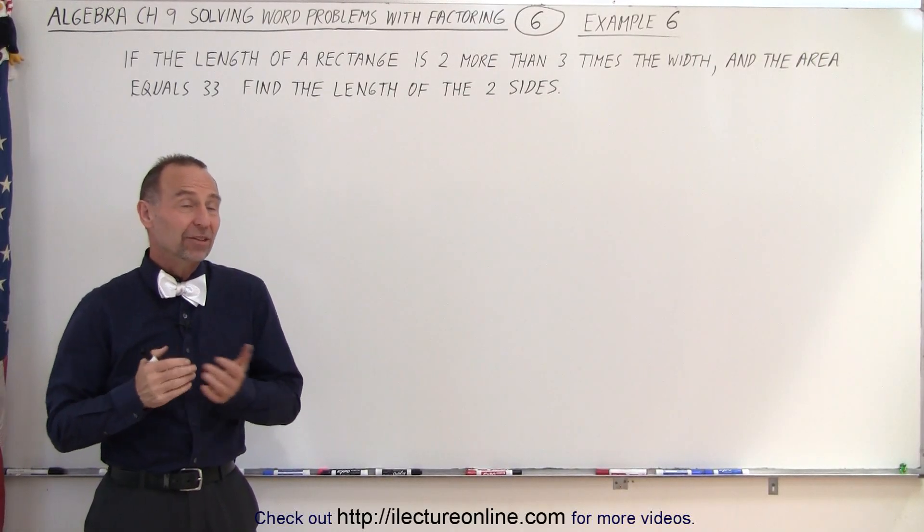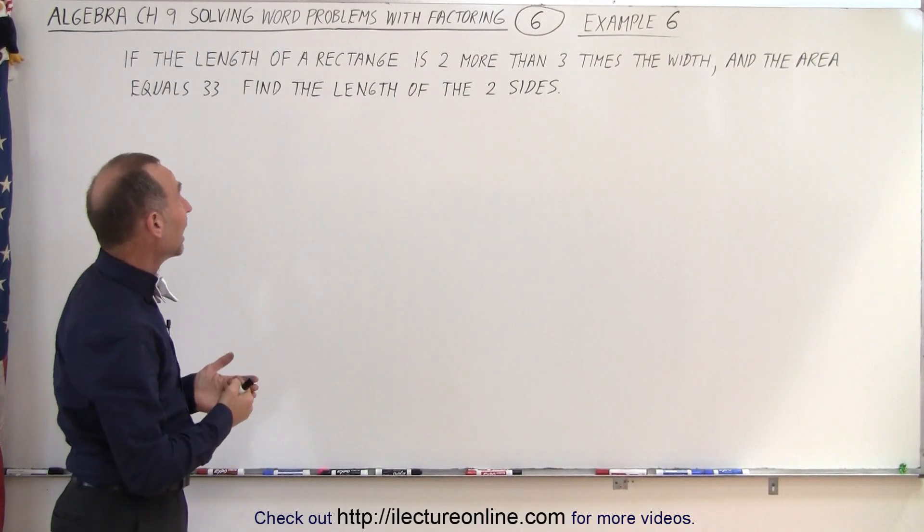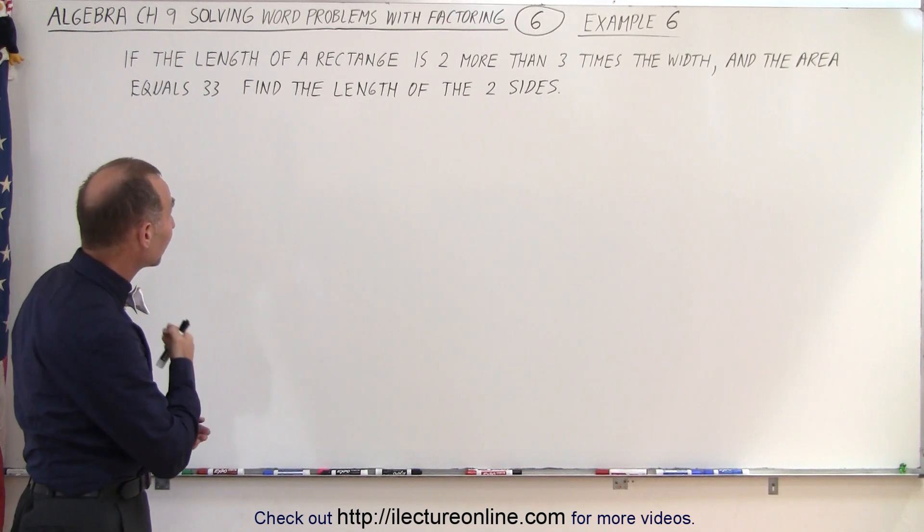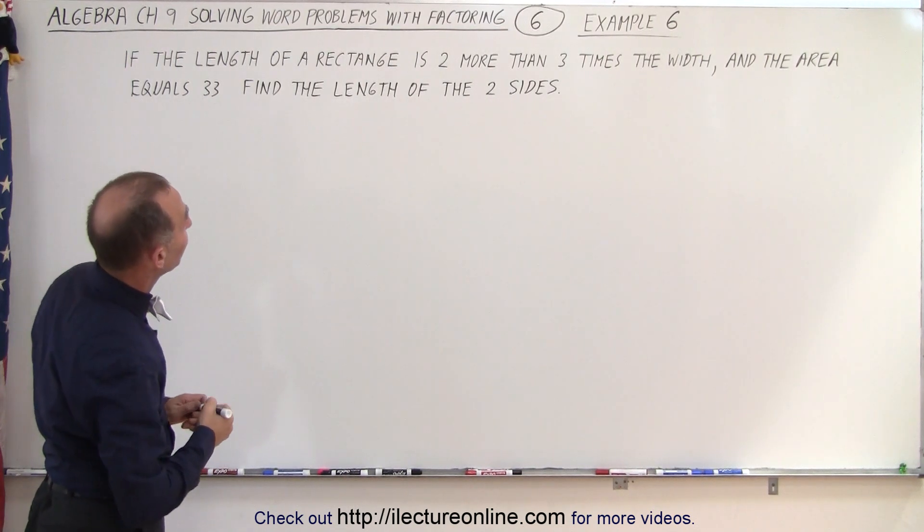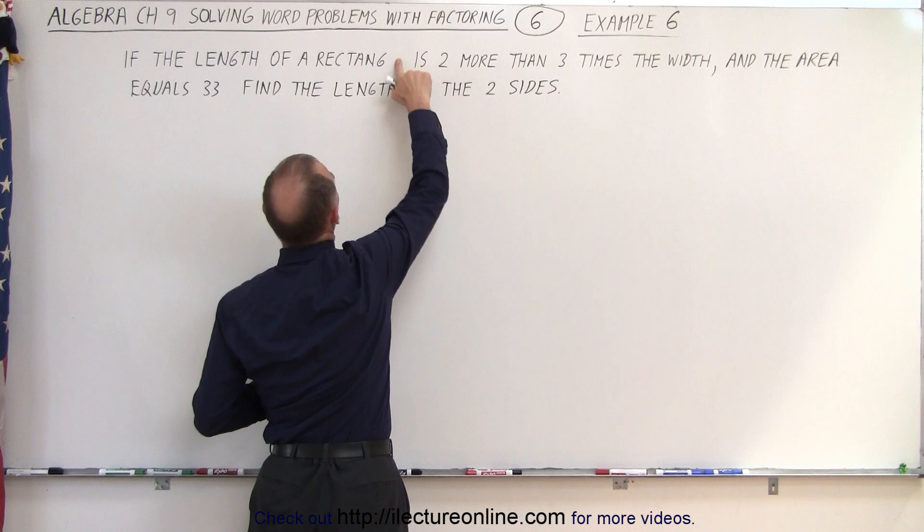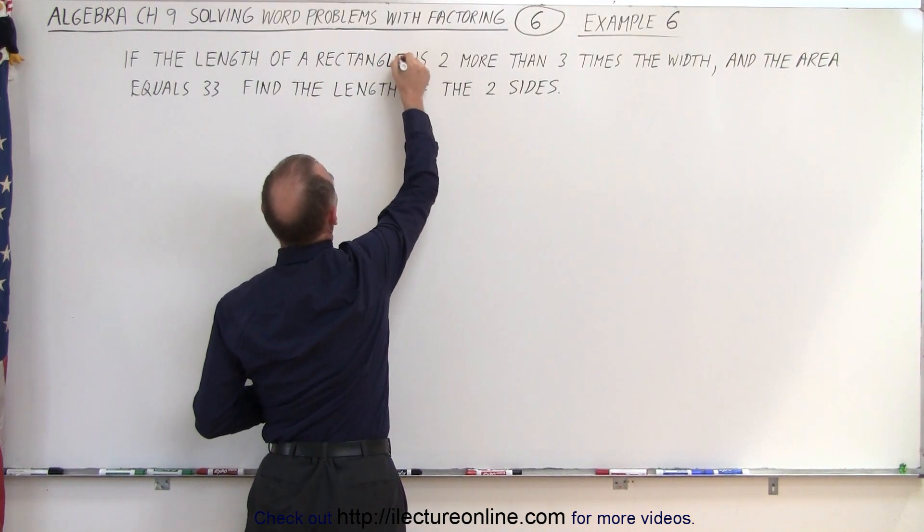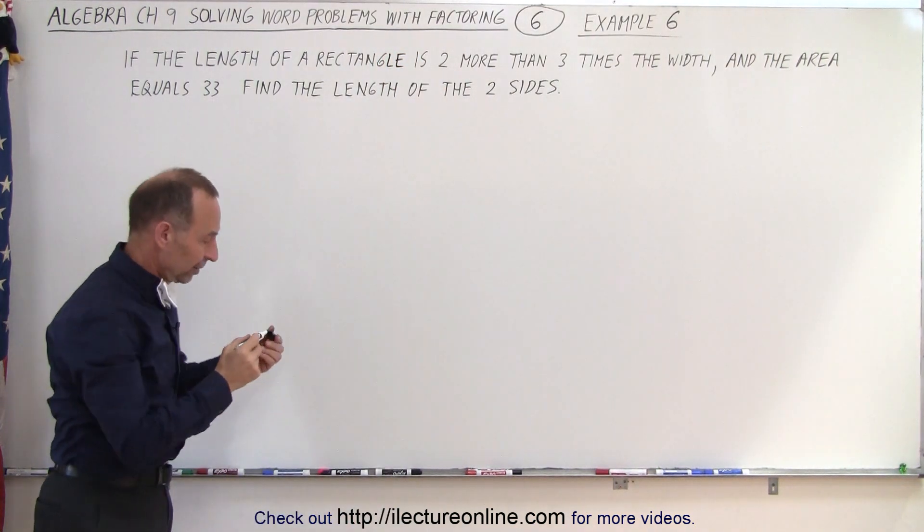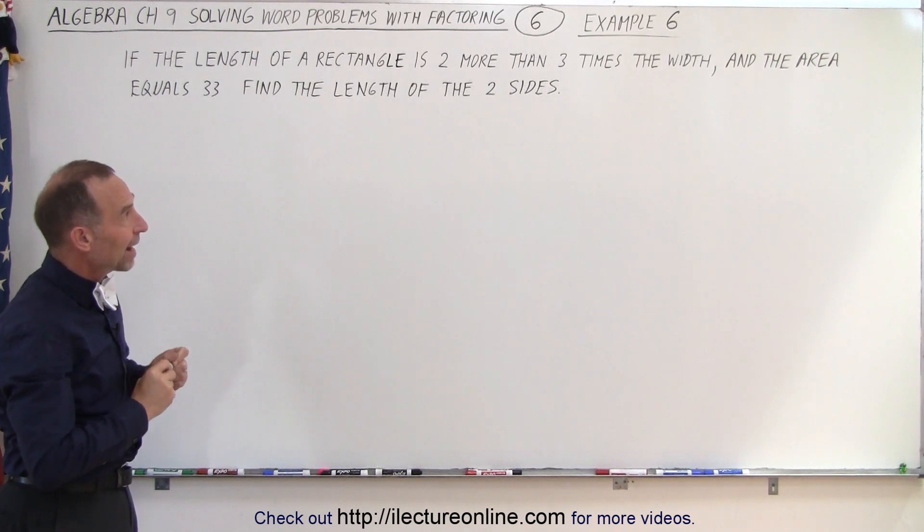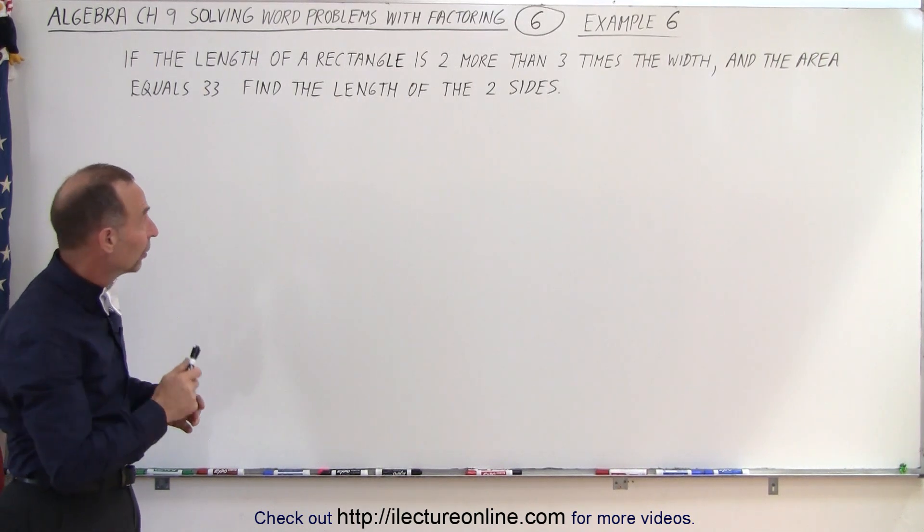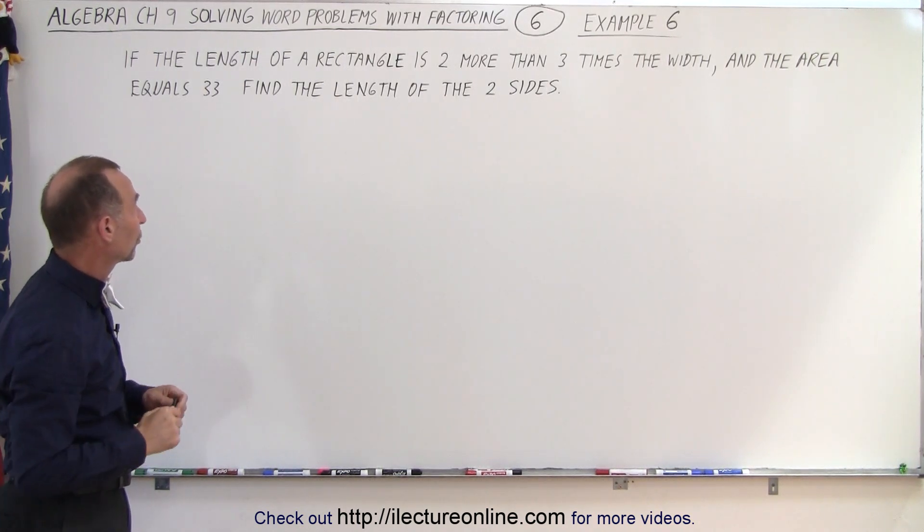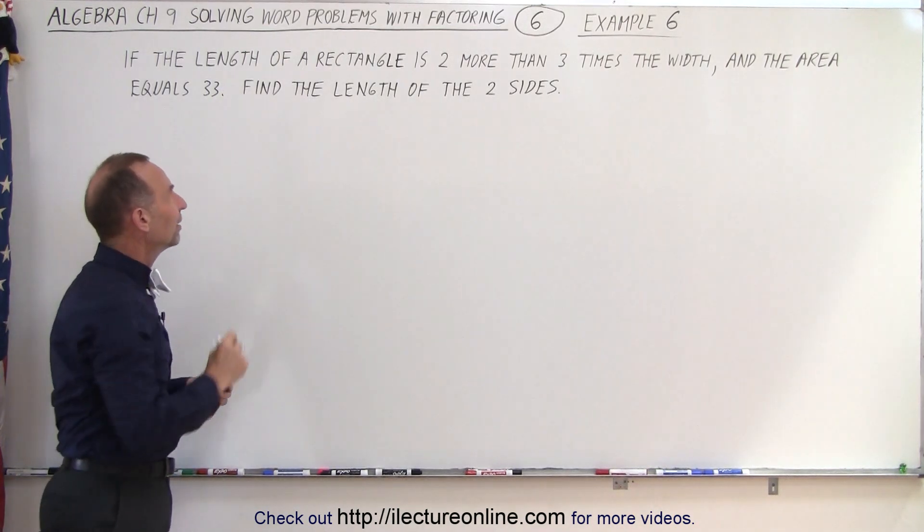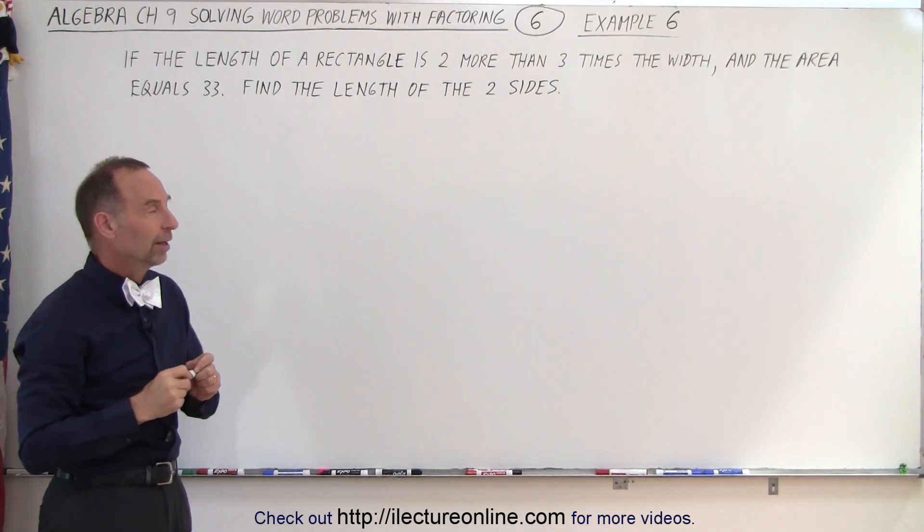Welcome to iLecture Online. Our next geometric figure is a rectangle, and they tell us that the length of the rectangle is two more than three times the width, and the area equals 33. Find the length of the two sides.